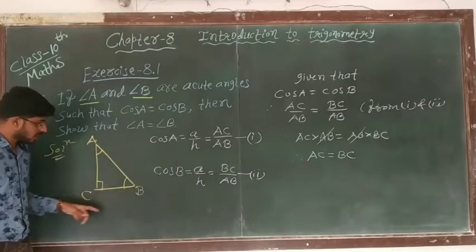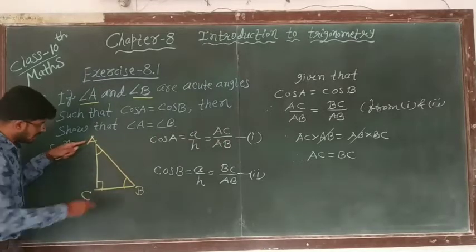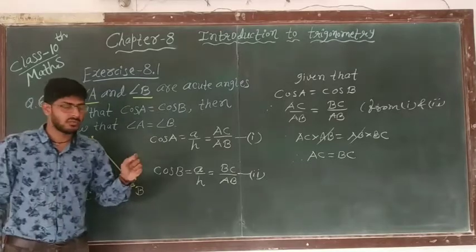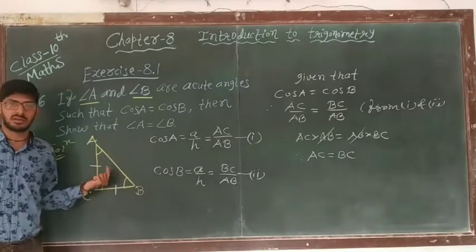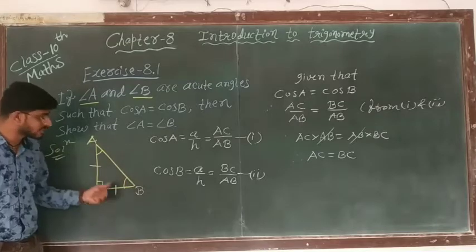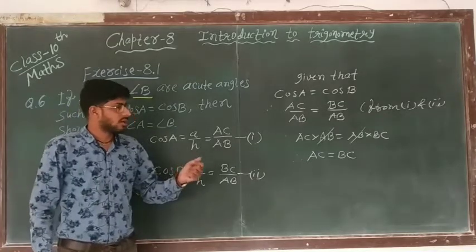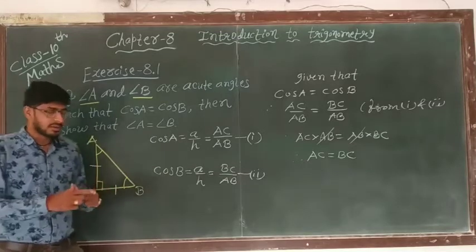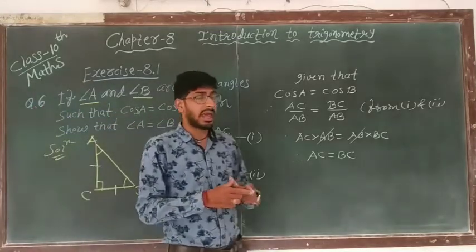in given triangle, AC equal to BC. It means given triangle is isosceles triangle because 2 sides are equal. It means given triangle is isosceles triangle. But we know that in isosceles triangle,